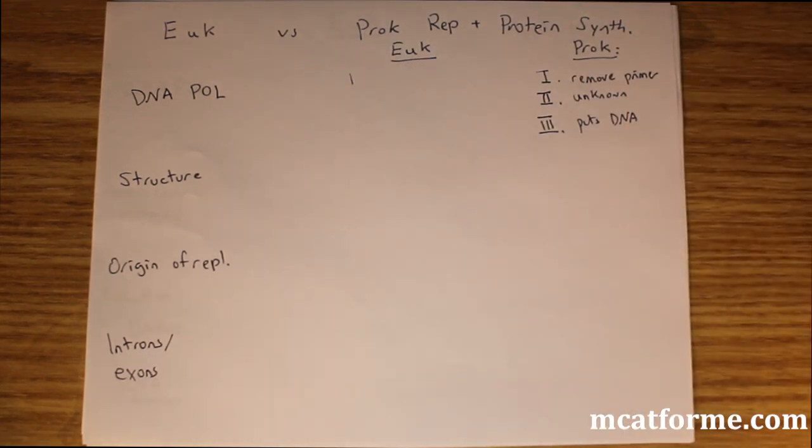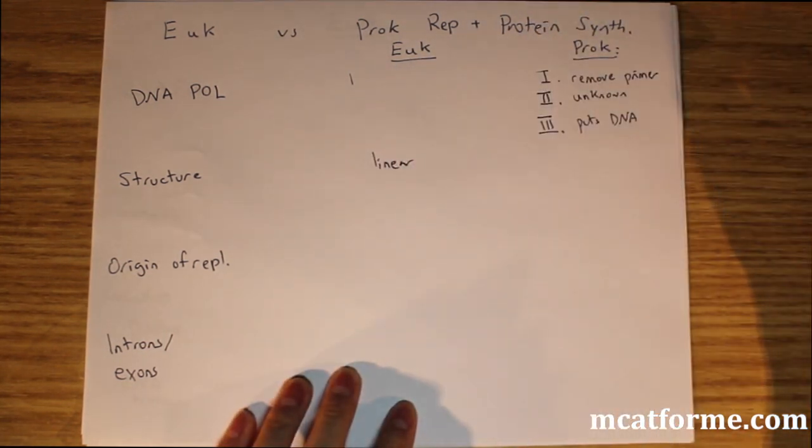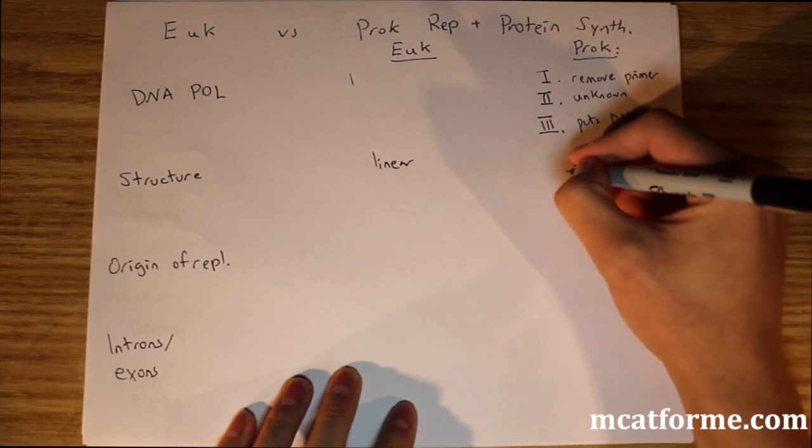The second topic is structure. Eukaryotic chromosomes are linear, versus prokaryotic chromosomes which are circular.